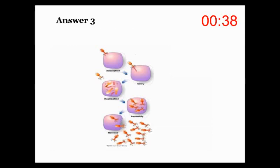This flowchart gives information about the 5 steps of how a virus works. To begin with, we can see that the 5 steps are named adsorption, entry, replication, assembly and release respectively.